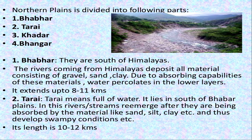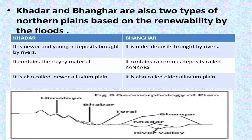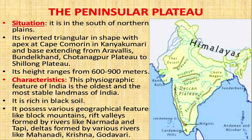When we talk about the Tarai, the river re-emerges from the Bhabar. This is an area where water is too much, and these watery areas are known as Tarai. These are rich in forests and known for sugarcane cultivation. Districts like Meerut and Rampur come under the Tarai. Then Bhangar is made up of older alluvium with calcareous concretions, whereas Khadar is new alluvium and is much more fertile than Bhangar.